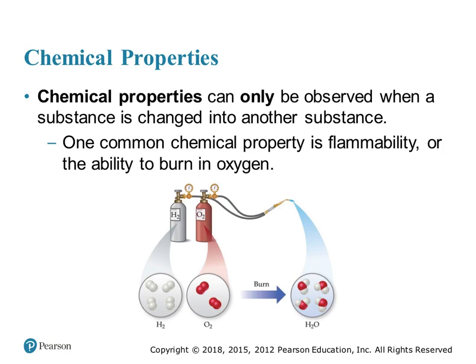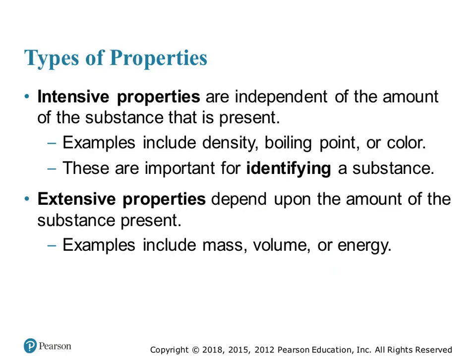Chemical properties mean I cannot get back what I started with; physical properties mean it's still the same substance, just changed into a different form. Two other important words in this unit are intensive and extensive. An intensive property does not depend on the amount of substance present — examples are density, boiling point, and color. An extensive property does depend on the amount of substance — examples are mass, volume, and energy, because all of those are dictated by the amount of substance.